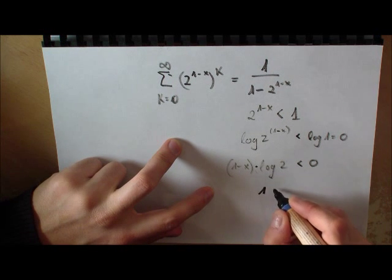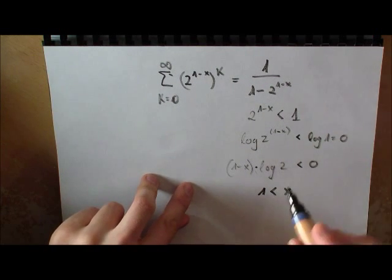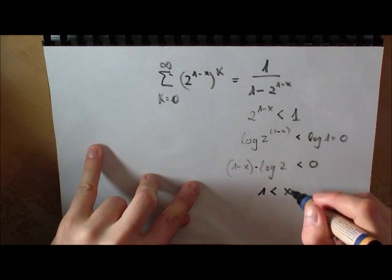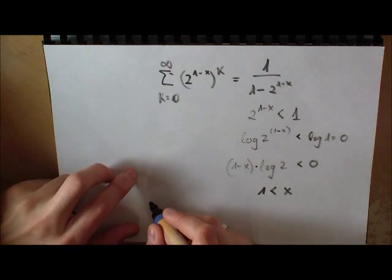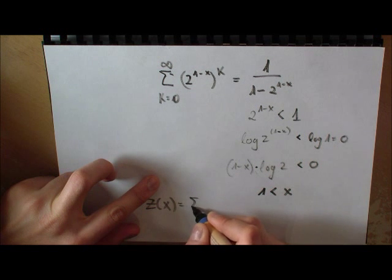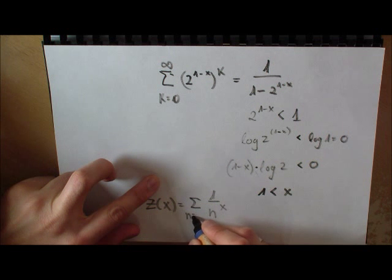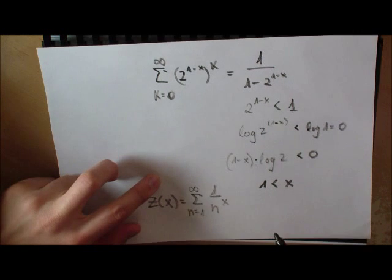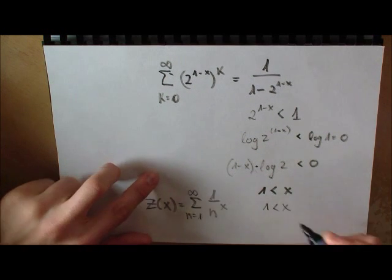We can divide by log 2, which is a positive number, and what we get is a converging sum if x is greater than 1. So what this means is that zeta of x, which was this sum,